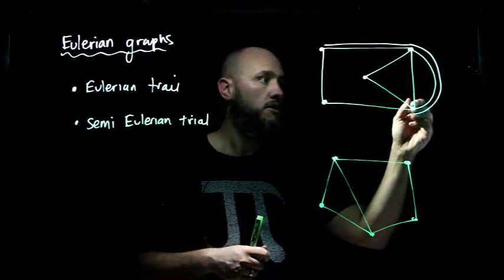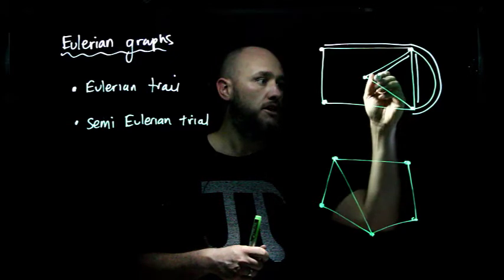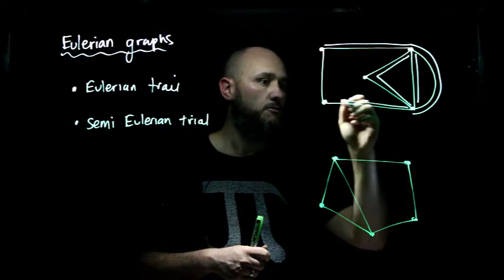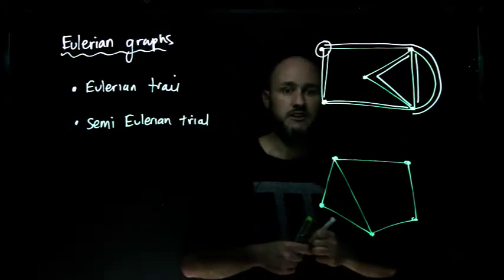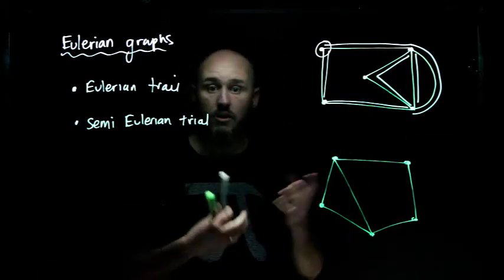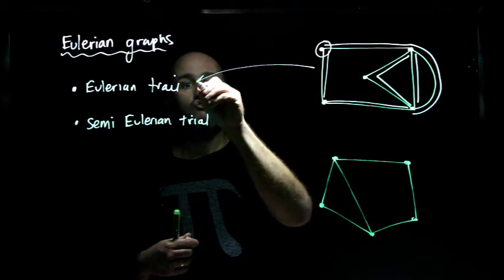I follow this one around, I go up to here, I go down, I go along there, I come along here, and then I finish and I start and finish there. And it doesn't matter which one I start on, I can do it. So this is called an Eulerian Trail.